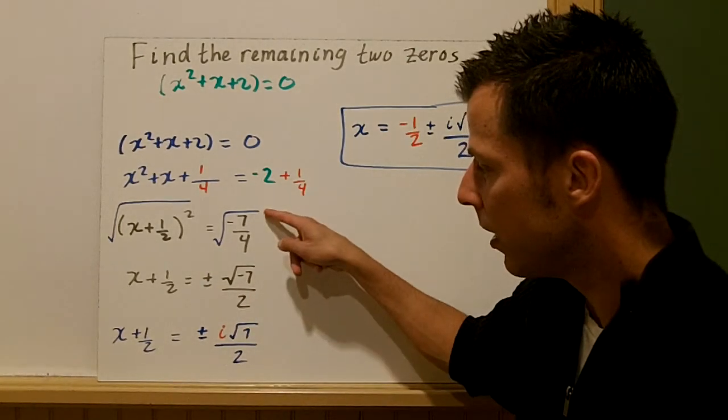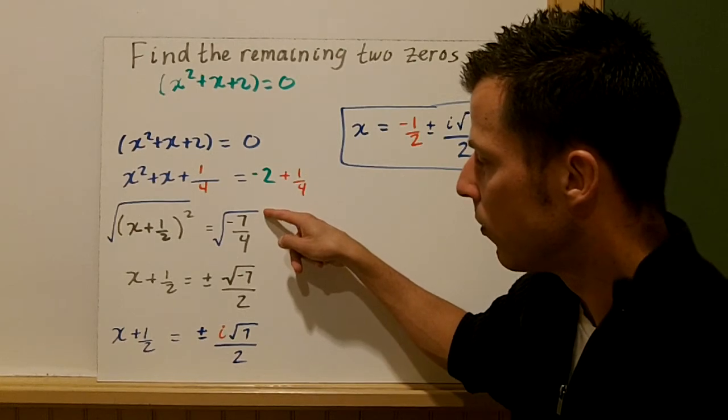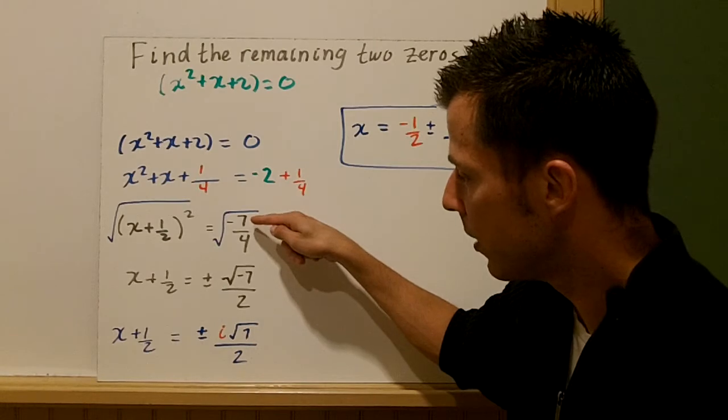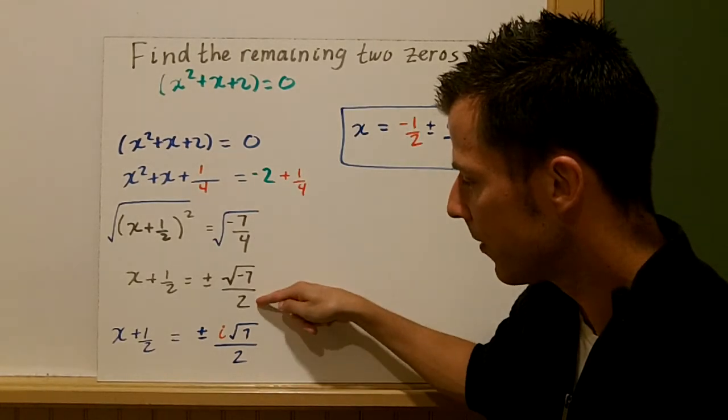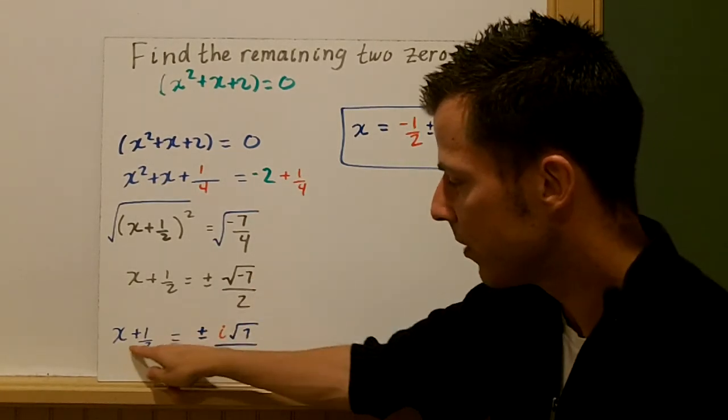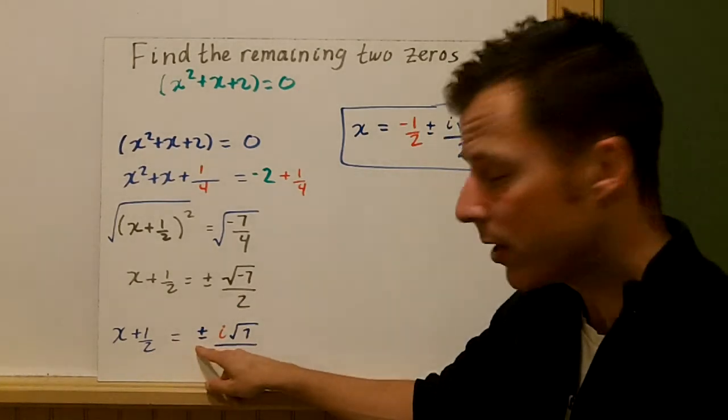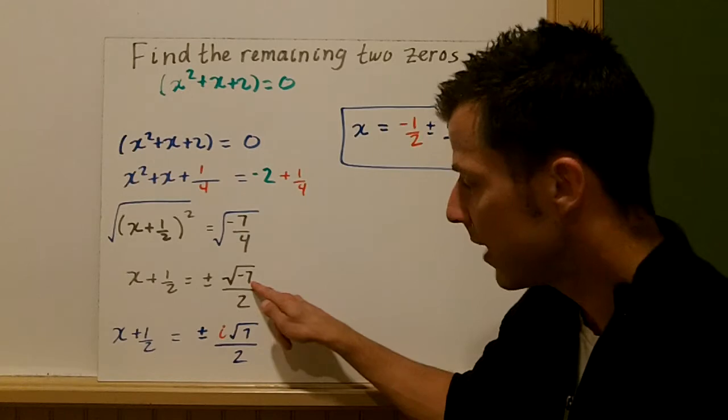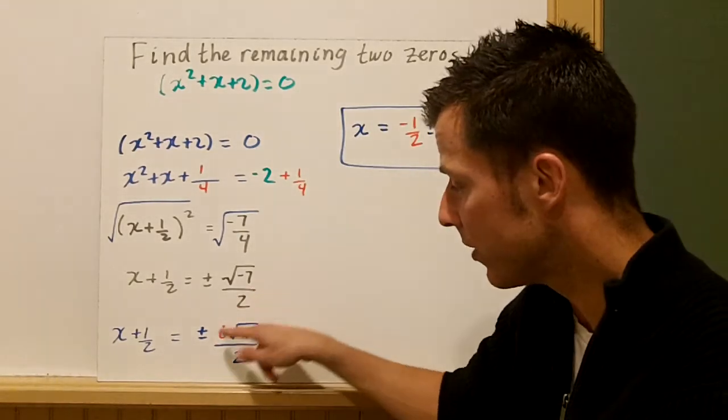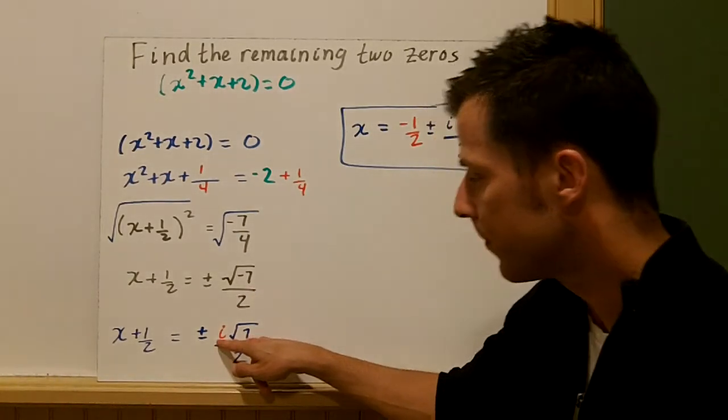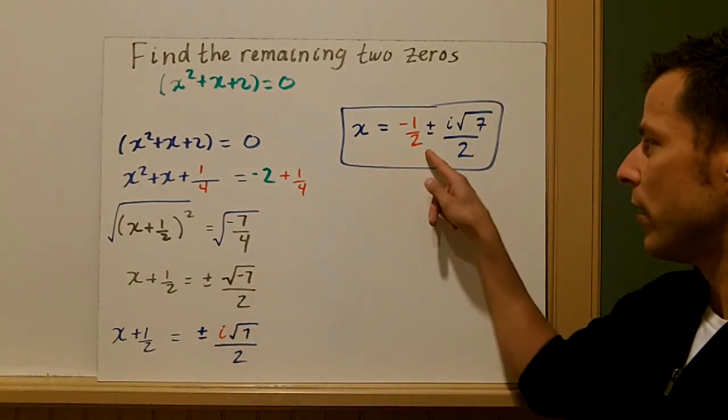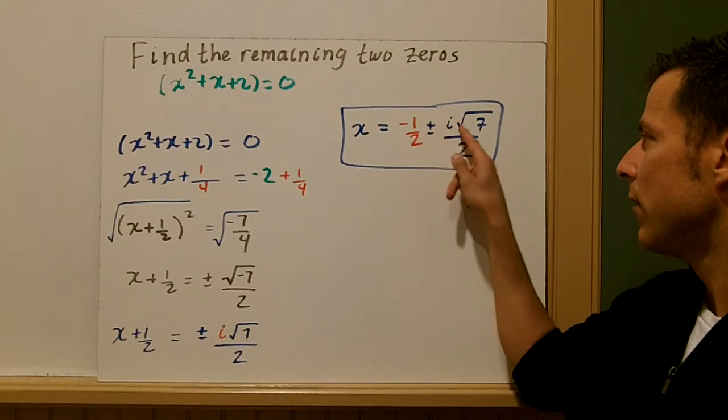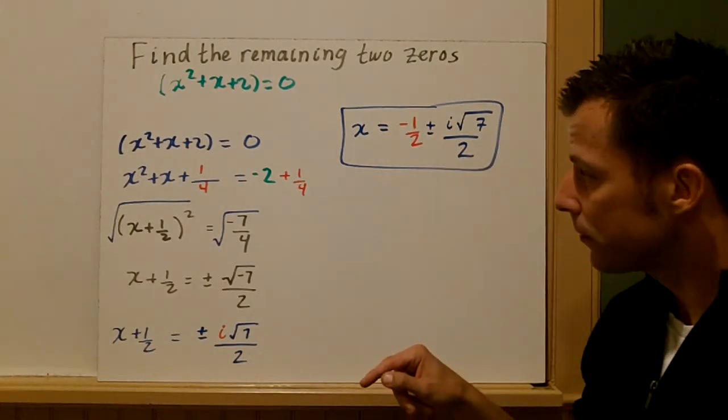And I can, with the quotient, I can take the radical, the square root of the numerator and denominator separately here. And then I have x + 1/2 = ±i√7/2. -7 is 7 times i^2. So that i^2, or that i comes out. And now I just bring over the 1/2. So x = -1/2 ± i√7/2.